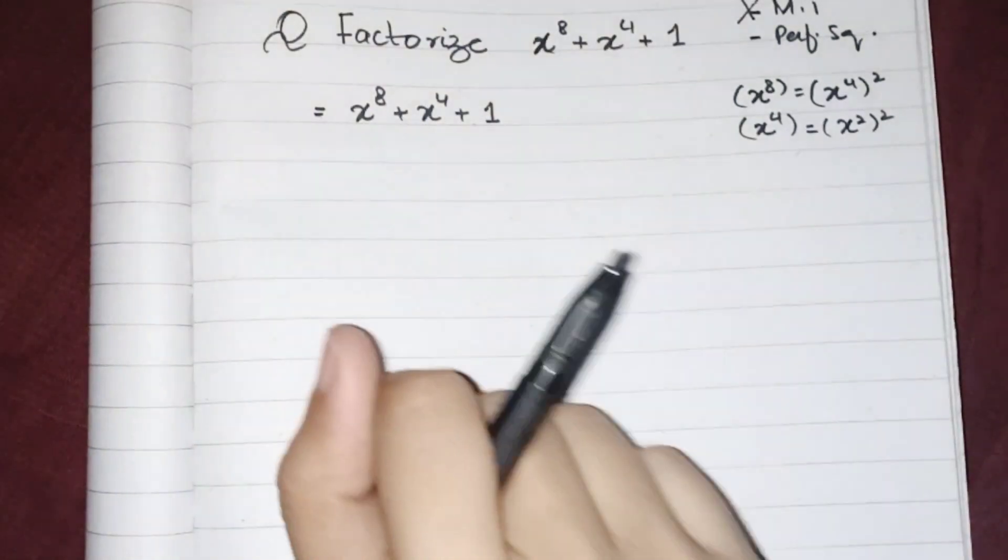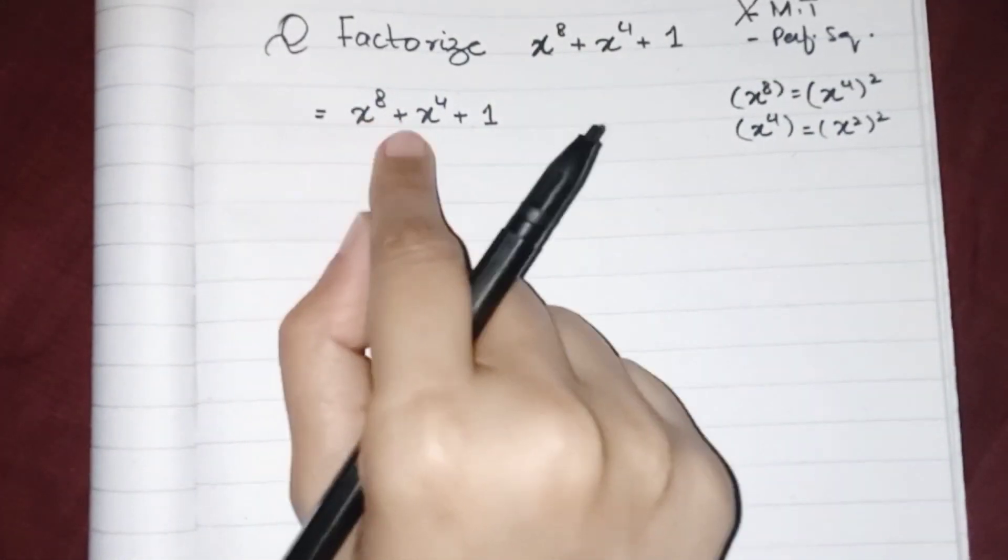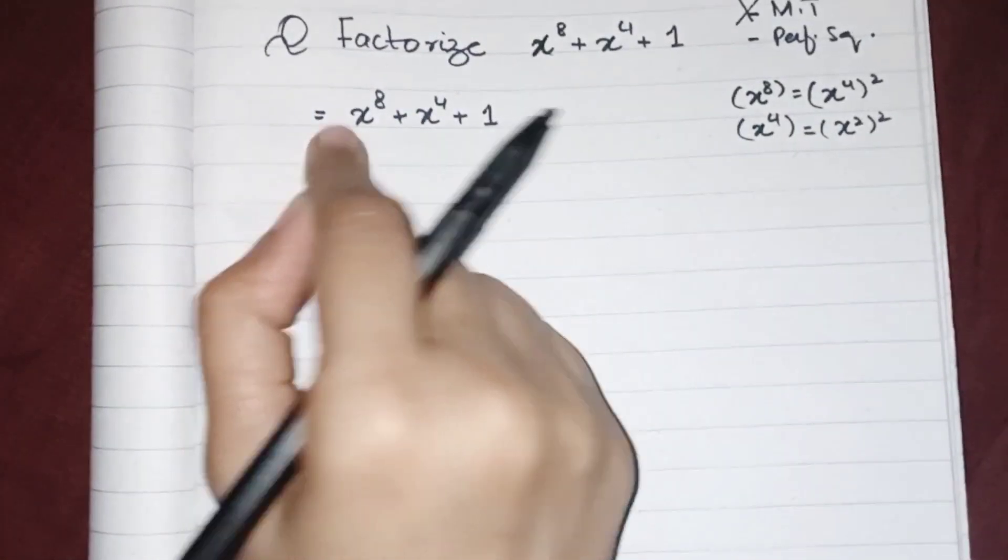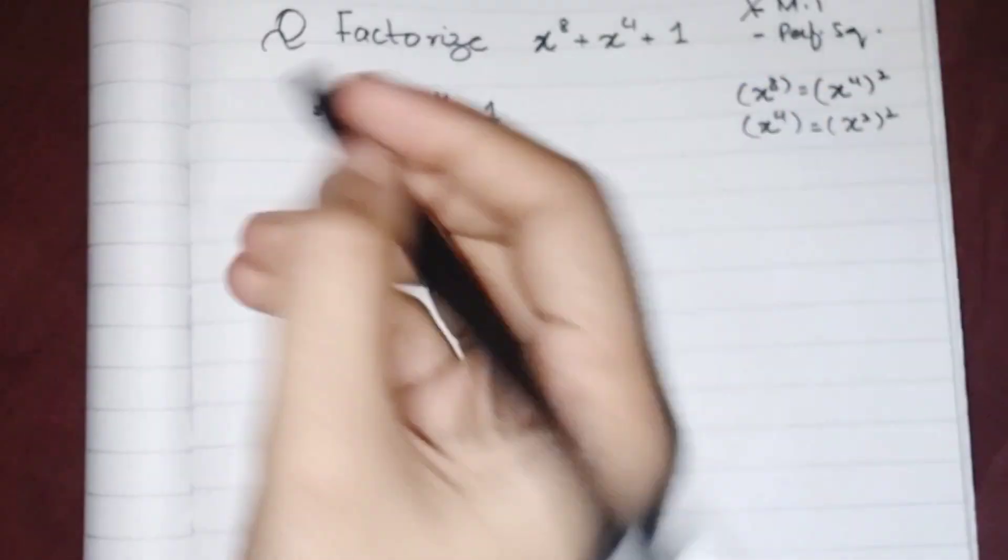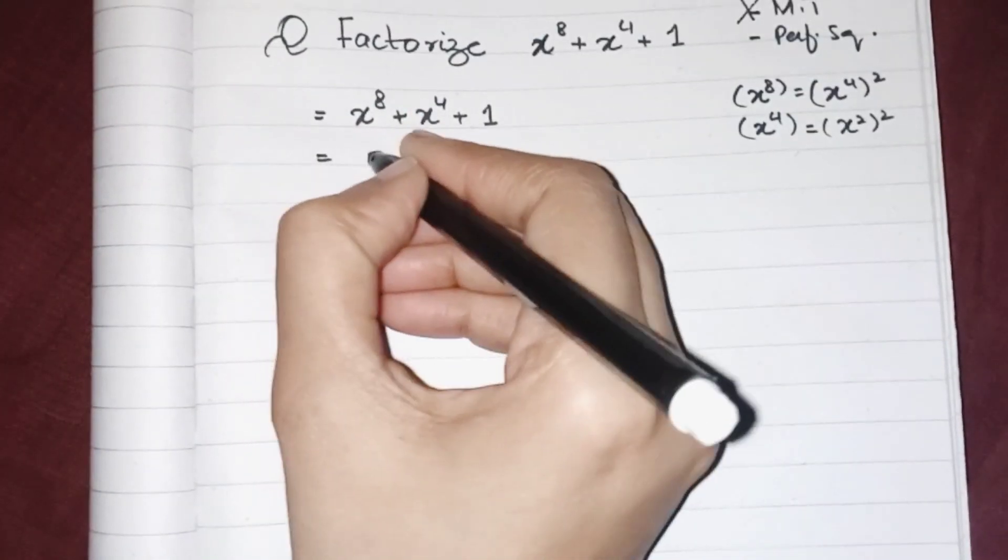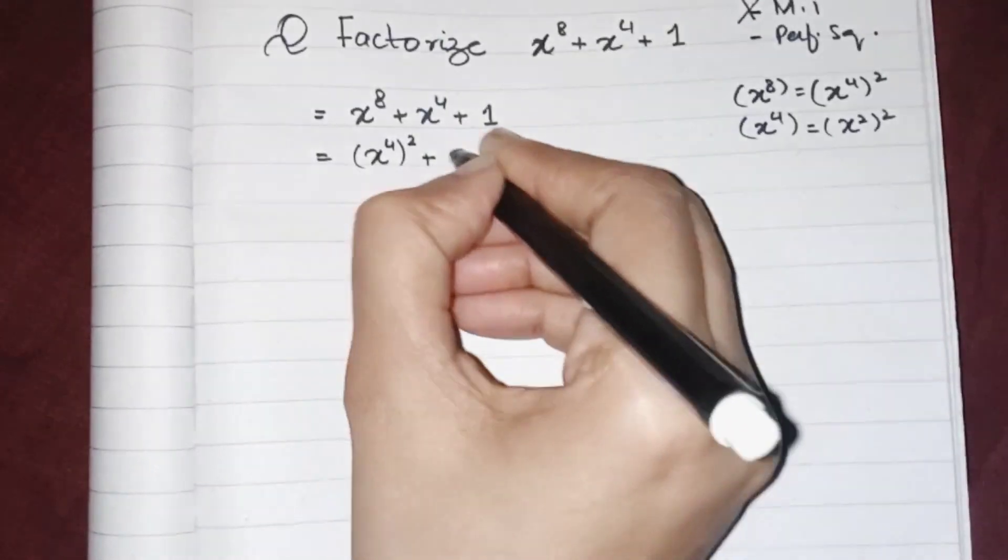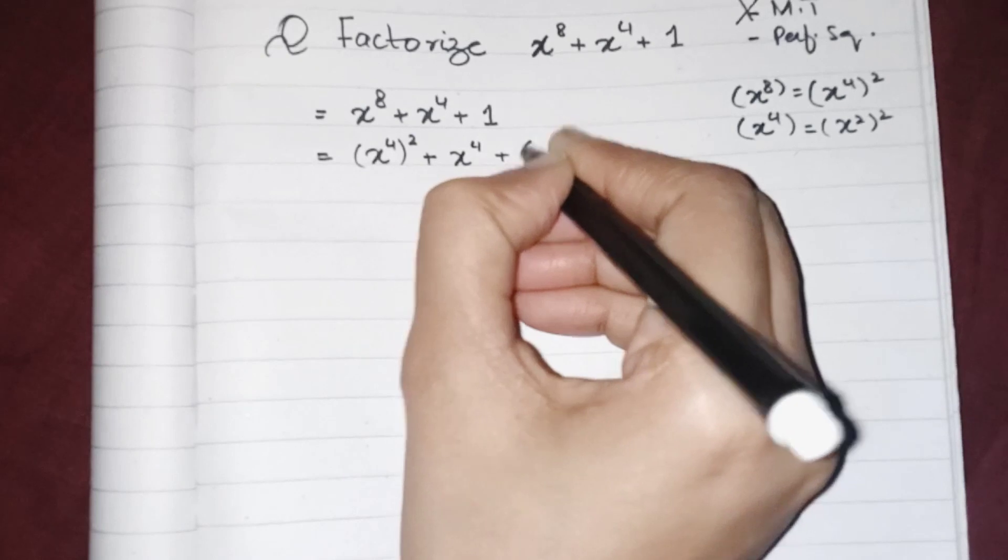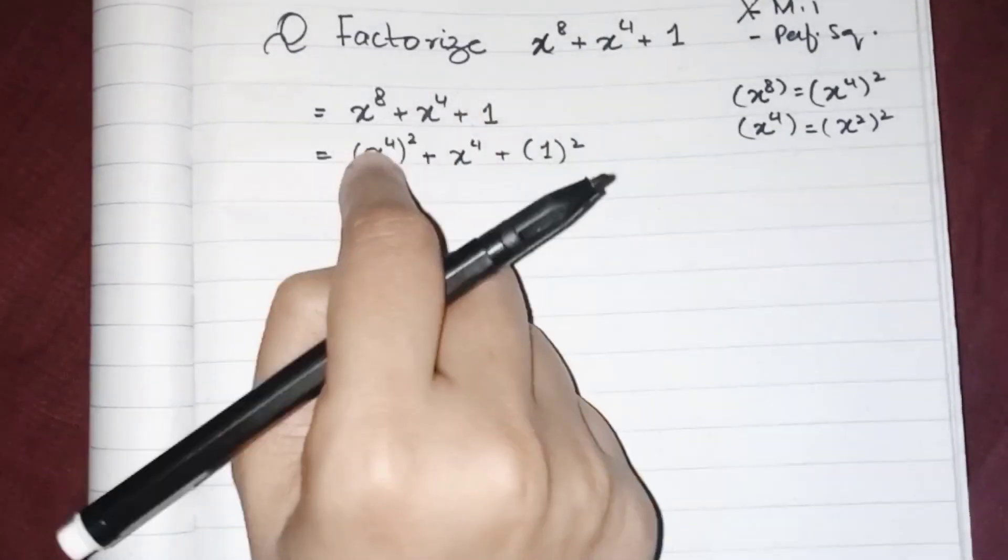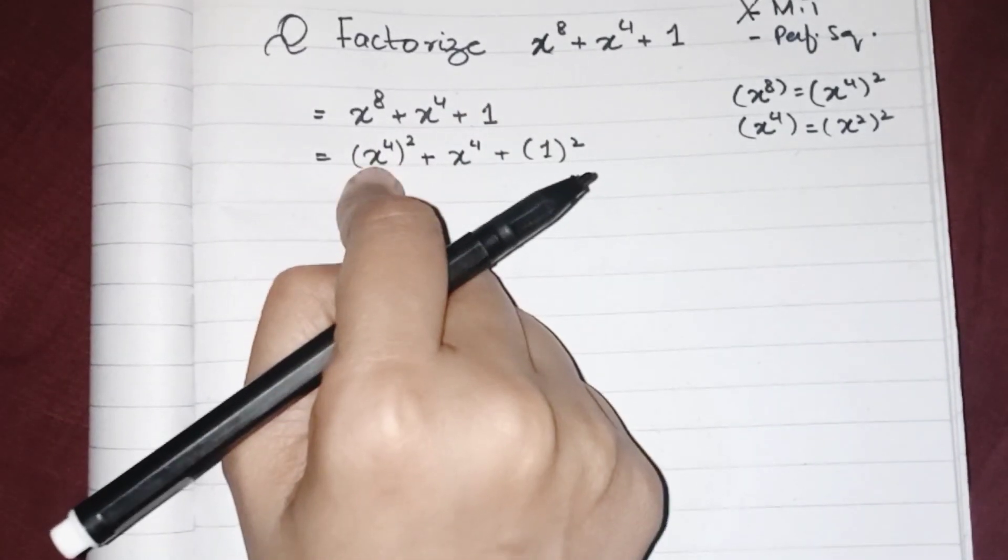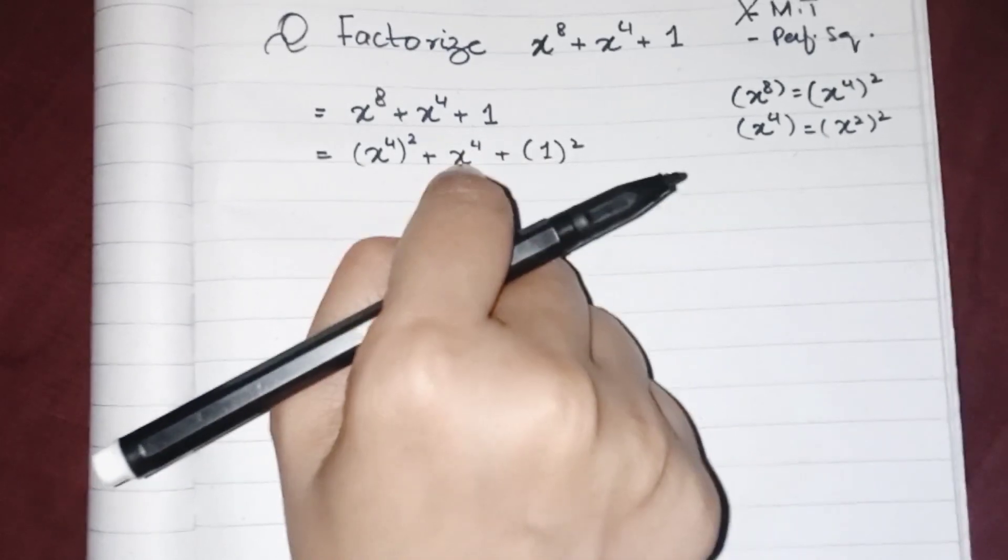To make it a perfect square, we can write (x^4)^2 plus x^4 plus 1^2. If this one is a and this one is b, so it should be a plus 2ab.